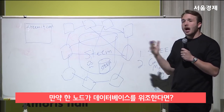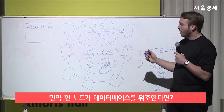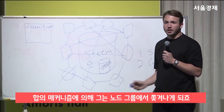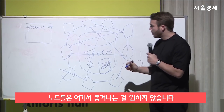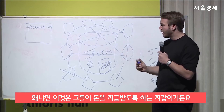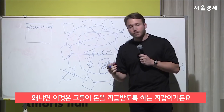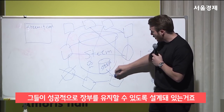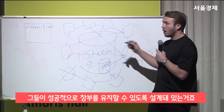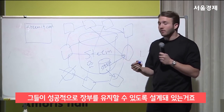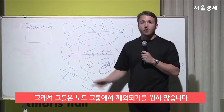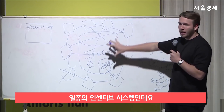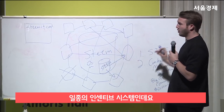And if one of them is not running the same copy of this database, they get kicked out of this consensus method. They don't want to get kicked out because it turns out that while they were participating in this, they were being paid — actually being paid from this cryptocurrency system. It's programmed to pay them each time they successfully keep track of the ledger. So they don't want to get kicked out because that's like losing their job. It's a system of incentives that propagates this network and makes the cryptocurrency possible.